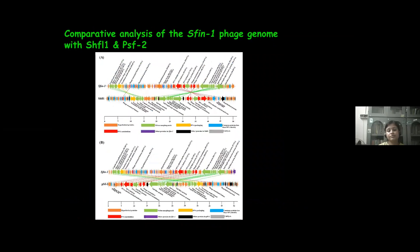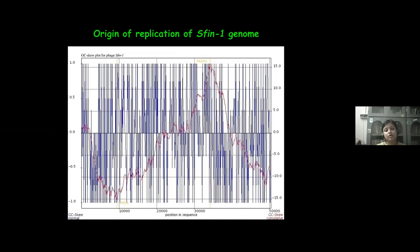These three phages have close genomic proximity, yet differences lie in that the positions of the genes and the gene orientations are different. For those reasons, these three phages have some differences though they share above 90% similarity. GC-skew analysis revealed that the putative replication origin site is around the 10 kb region and its terminus location is around the 34 kb region.